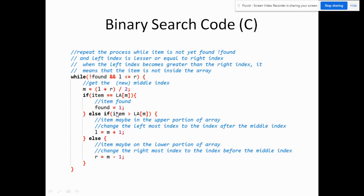If the item is not equal, and the item is higher than the middle element, it may be in the upper portion of the array, so we change the leftmost index to m plus 1. If it is not higher, it may be on the lower portion, so we change the rightmost index to m minus 1. We repeat this until the two loop conditions are no longer met — meaning the item is found or r is greater than l.